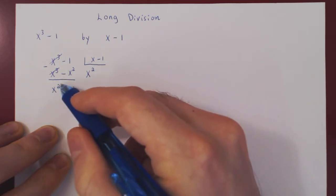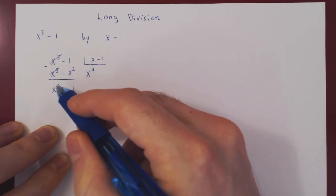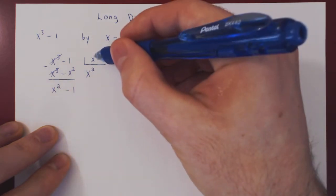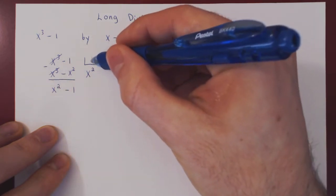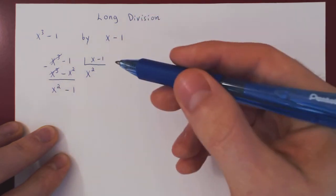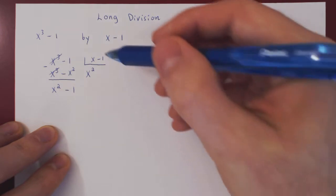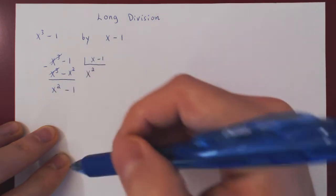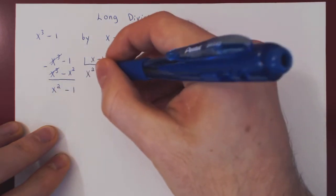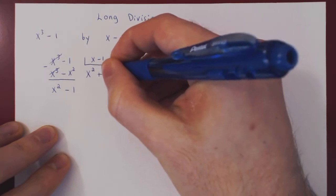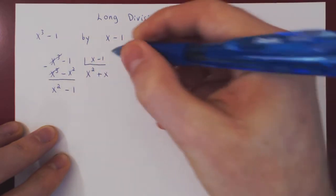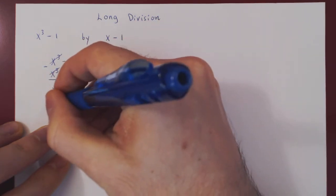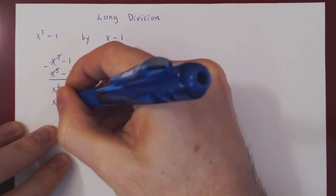As long as the degree — the largest power of x that shows up in the remainder — is equal to or larger than the largest power of x in the divisor, we have to keep going. We ask: what times x will give us x squared? The answer is x, so we say plus x.